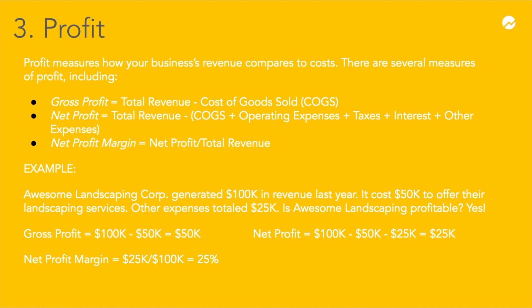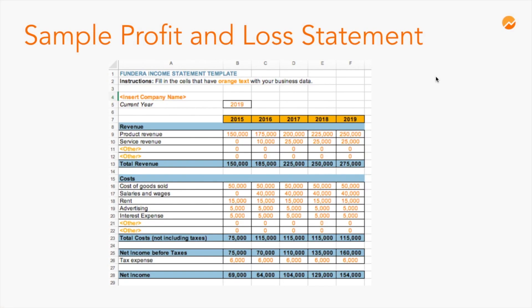Profit is typically recorded on a financial statement called the income statement or profit and loss statement. Here's a sample profit and loss statement so you can see how the numbers work together. At the top of the statement, you'll see the different types of business revenue streaming into the company. In the middle, you'll see the costs the company has to pay to operate and produce goods. At the very bottom, you'll see the net income or net profit. In this example, the business's net profit has steadily increased over a five-year period, which is a great sign.